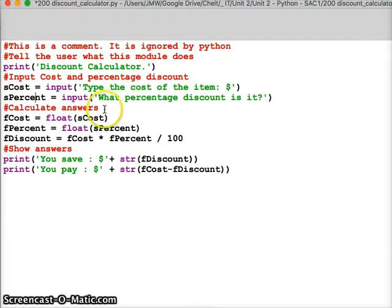By the time we get to this line here, which is another comment, we will have written discount calculator on the screen, we will have written type what the cost of the item is on the screen and would have typed in the cost. The program will have written what's percentage discount is it and then waited for us to type in what the percent is.